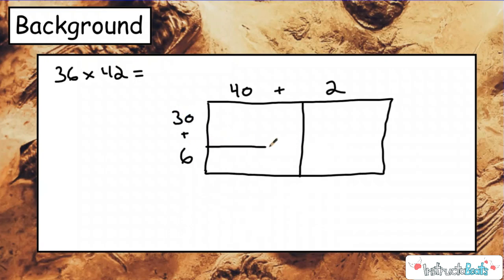And then we are able to multiply larger numbers using simple basic facts. 3 times 4 is 12, but really that's 3 tens times 4 tens, so we had to add the two zeros. And then over here we had 60, and then here we had 240, and we had 12.